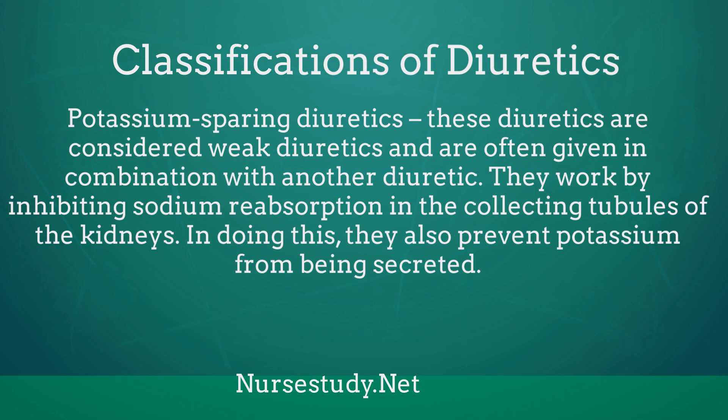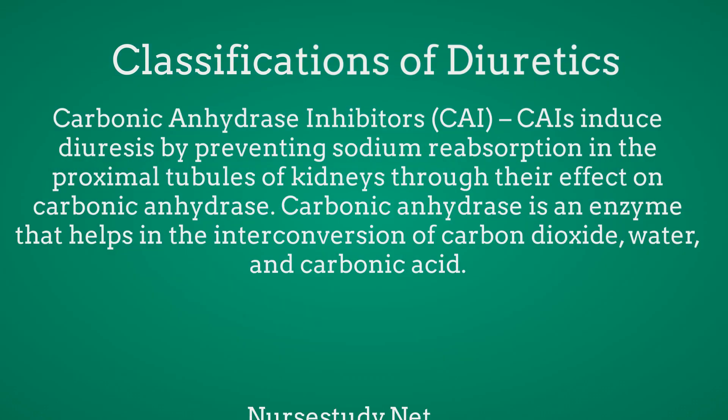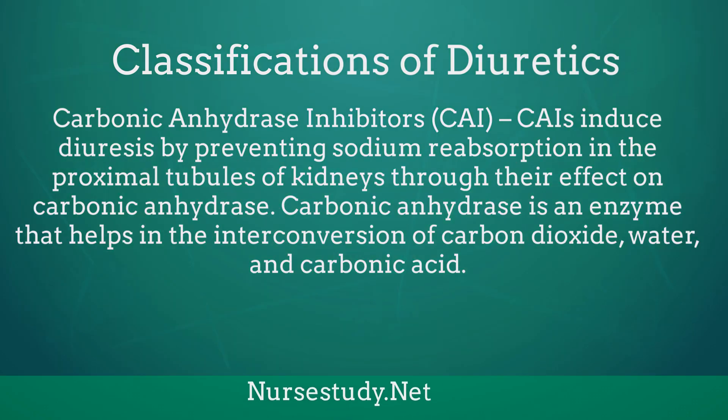Potassium-sparing diuretics are considered weak diuretics and are often given in combination with another diuretic. They work by inhibiting sodium reabsorption in the collecting tubules of the kidneys, and in doing so, they also prevent potassium from being secreted. Carbonic anhydrase inhibitors, or CAIs, induce diuresis by preventing sodium reabsorption in the proximal tubules of the kidneys.